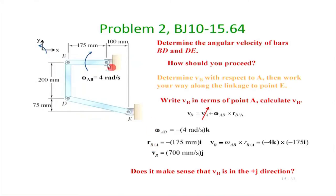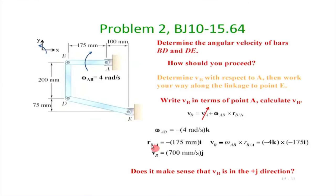The position vector r_B/A in this coordinate frame equals minus 175i, since B is to the left of A along the x-axis. Let us fix a coordinate axis x and y. The coordinate of B is minus 175i, where i is the unit vector in the x direction. Substituting: v_B = omega_AB cross r_B/A. Just do the algebra and you will see that v_B is 700 millimeters per second in the j direction — upward. This makes perfect sense because from simple kinematics, point B will only move upwards and the magnitude will be 175 times omega.